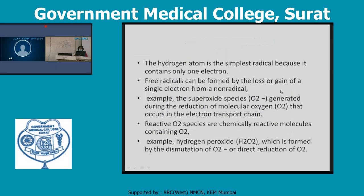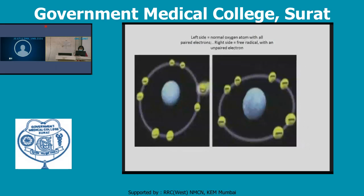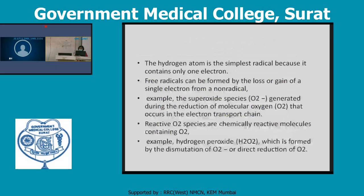Hydrogen is the simplest radical because it contains only one electron. Free radicals can be formed by loss or gain of single electrons from non-radicals.